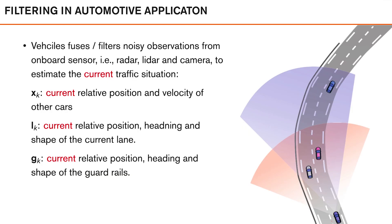To make things more concrete, let us look at some filtering or fusion problems in modern automotive applications. Modern vehicles today are equipped with several onboard sensors — such as radar, lidar, or camera. We want to use noisy observations from these sensors to estimate a more refined view of the current traffic situation. Driver assistance systems then use this refined view to assess dangerous situations, warn the driver, or automatically intervene. For a self-driving vehicle, this is the basic information used to plan a safe and comfortable path that the control algorithms can follow.